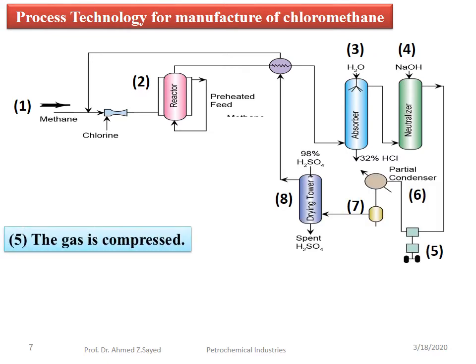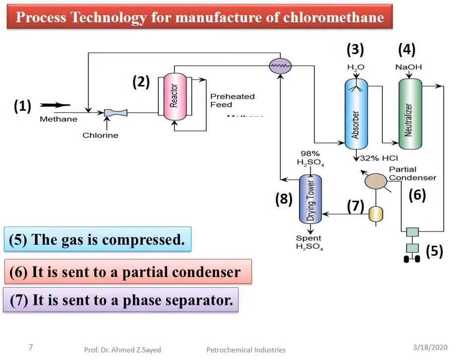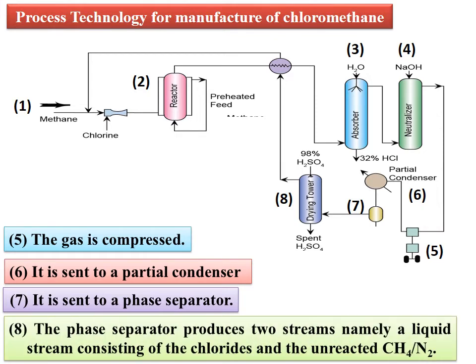Step 5: The gas is compressed. Step 6: It is sent to a partial condenser. Step 7: It is sent to a phase separator. Step 8: The phase separator produces two streams, namely a liquid stream consisting of the chlorides, and the unreacted methane and nitrogen.